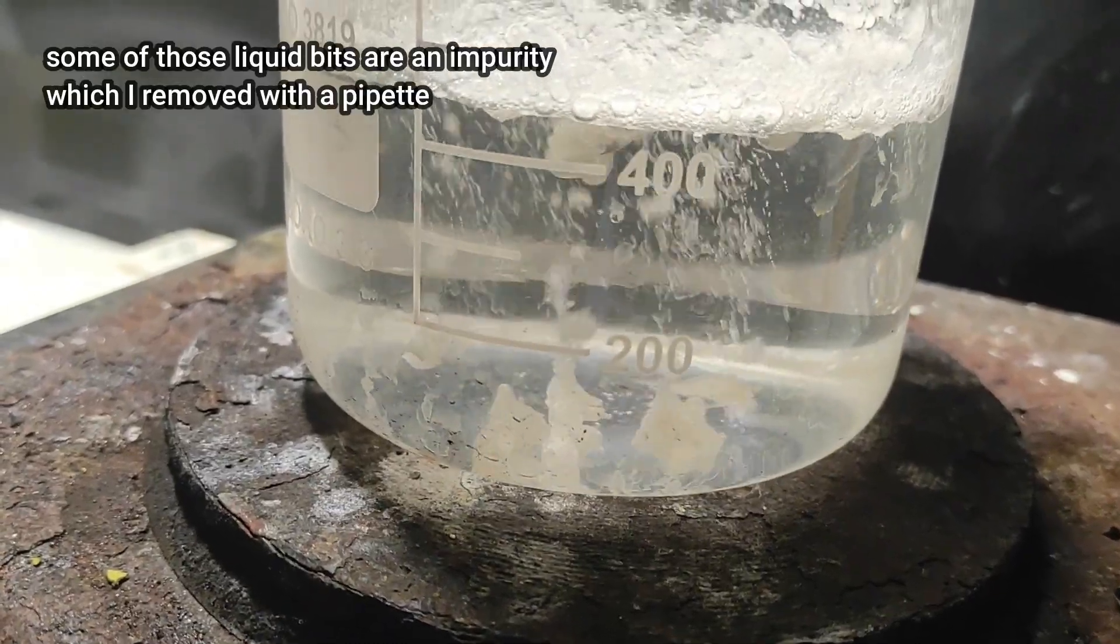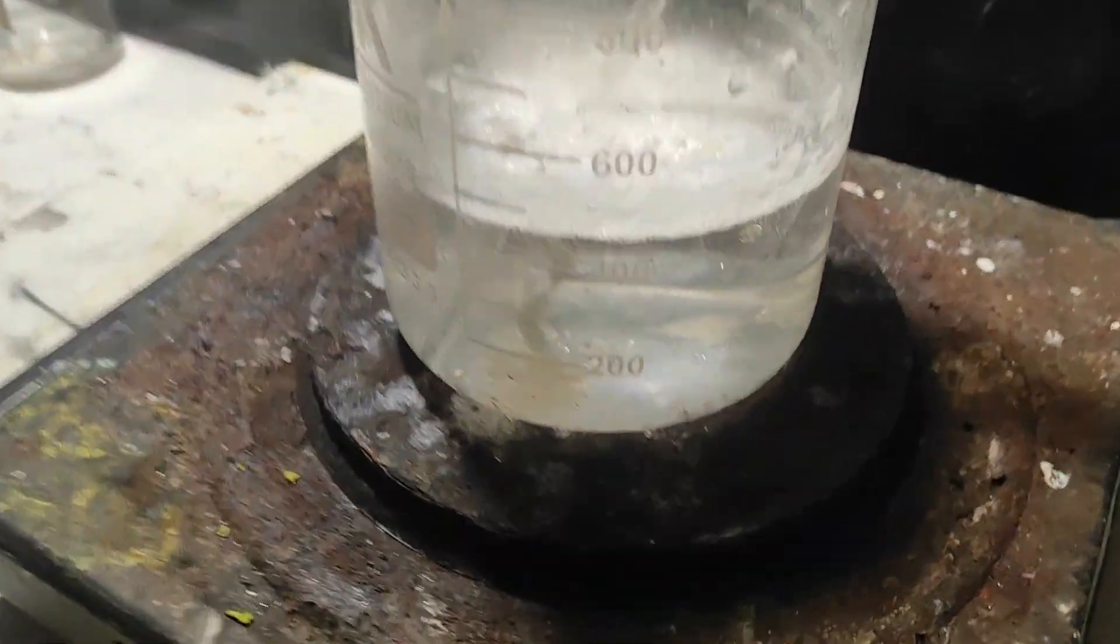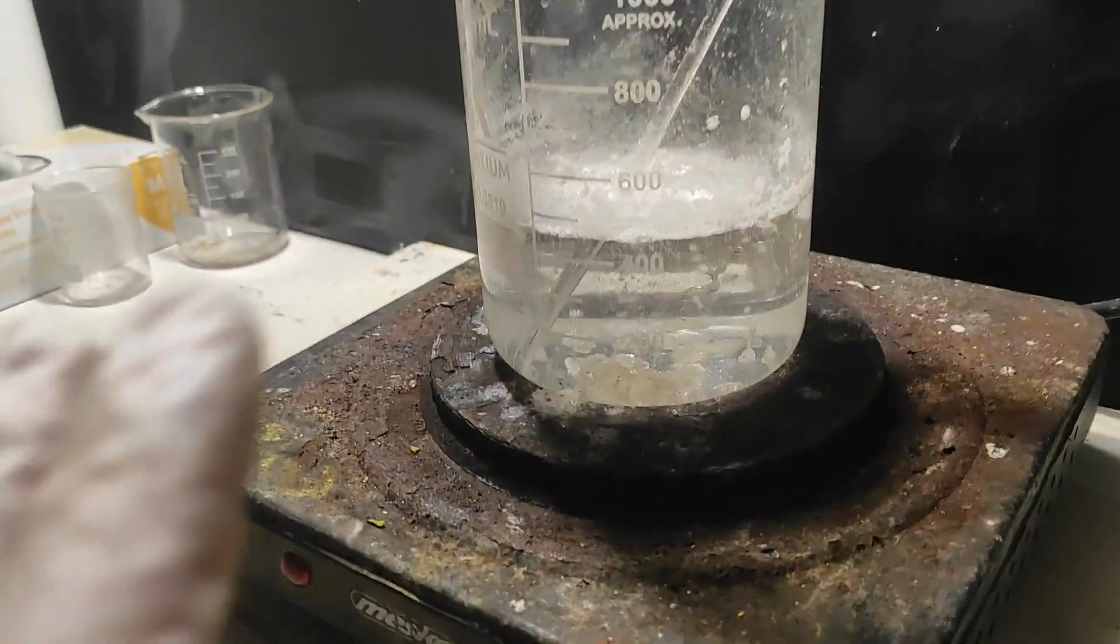You can also test the pH of the solution. If you add too much sodium carbonate, it will turn basic. And if you add it just enough, it should not change color. Now, to recover our sodium benzoate, we just need to boil off all of the water by heating more.